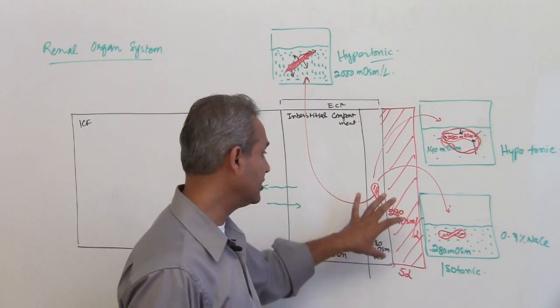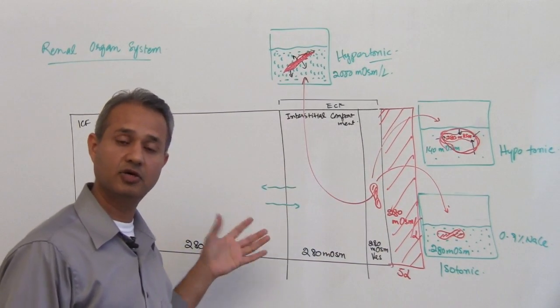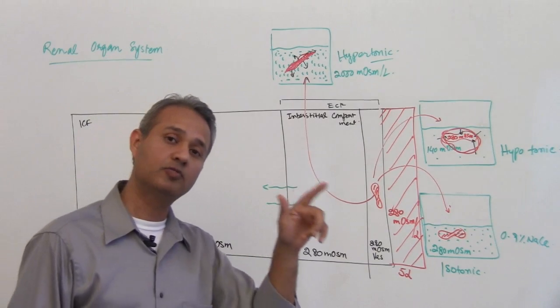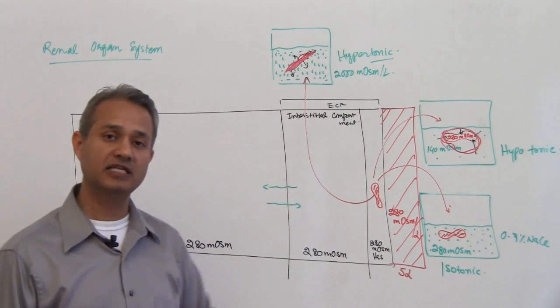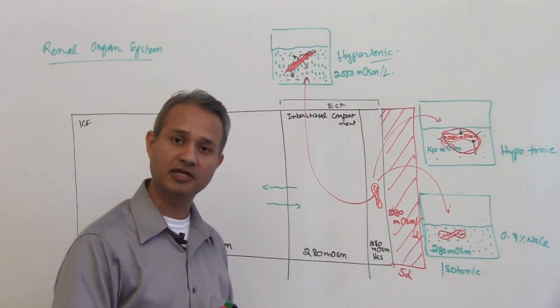If the water concentration did not change, do you think water will move in either direction? No. So net water movement is going to be zero. Why do I say the net water movement? This is a semi-permeable membrane. Water molecules have kinetic energy in them.